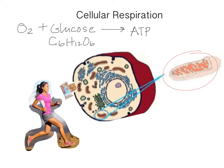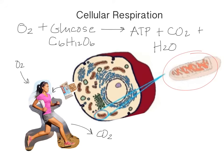ATP is the energy that your cells need to do everything they do. But as a byproduct, the runner is also going to release carbon dioxide into the air as well as some water. The runner is bringing in oxygen, bringing in glucose from food, releasing CO2 by breathing that out, and releasing water, usually through sweat. That is our equation for cellular respiration: oxygen plus glucose yields ATP, carbon dioxide, and water.